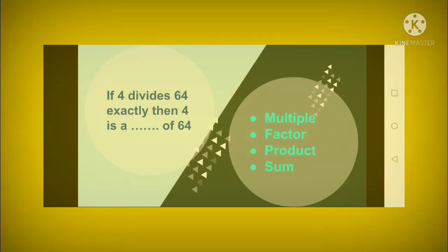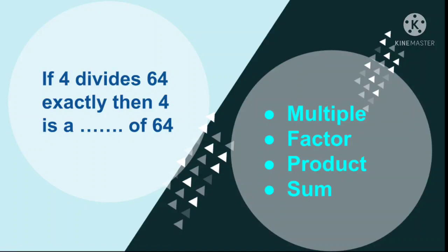Question number 13: If 4 divides 64 exactly, then 4 is a dash of 64. Options are multiple, factor, product, or sum.